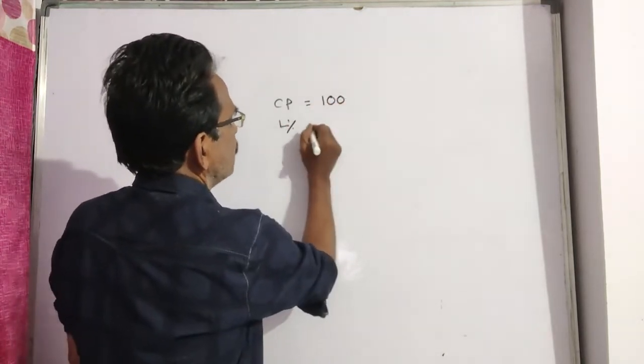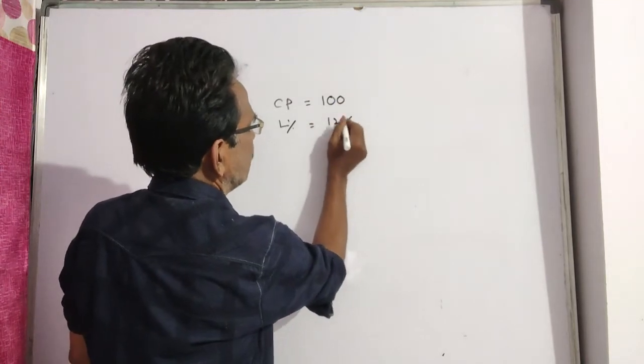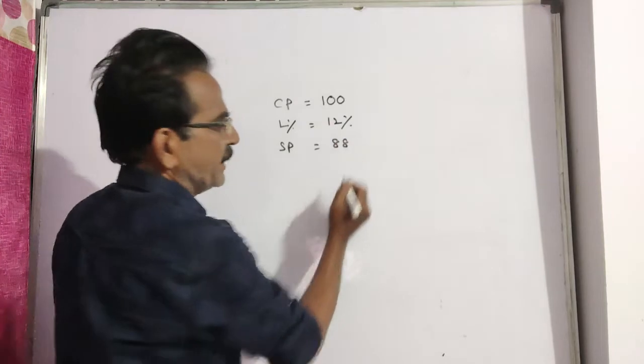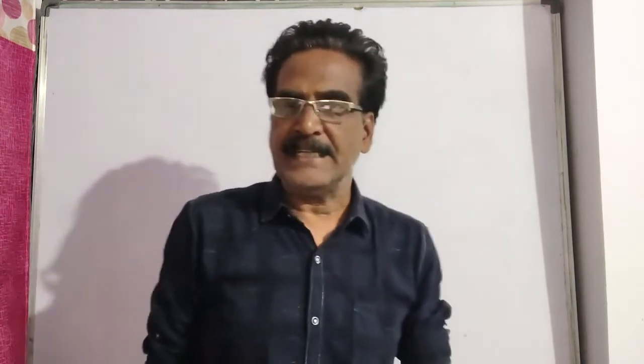Now the loss percent is 12%, then the sold price will be 88.